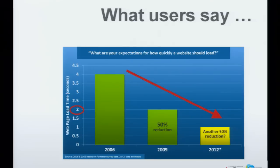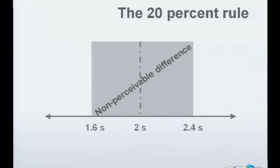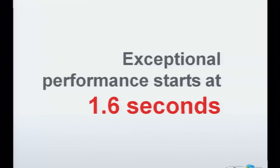Comparing this to what users say: a Forrester study from 2006 showed users expect a website to load in four seconds. By 2009, it was already down to two seconds, and analysts say next year it will be down to one second. Yesterday Steve even gave a talk about 100 milliseconds by 2015 or so. The problem is you might think we just have to be faster than two seconds. Unfortunately — or luckily — people are not clocked. It needs to be a certain significant difference in time to actually be perceivable. This is where the 20% rule comes into play: the difference between two timings must be at least 20%. So exceptional performance really starts at 1.6 seconds.